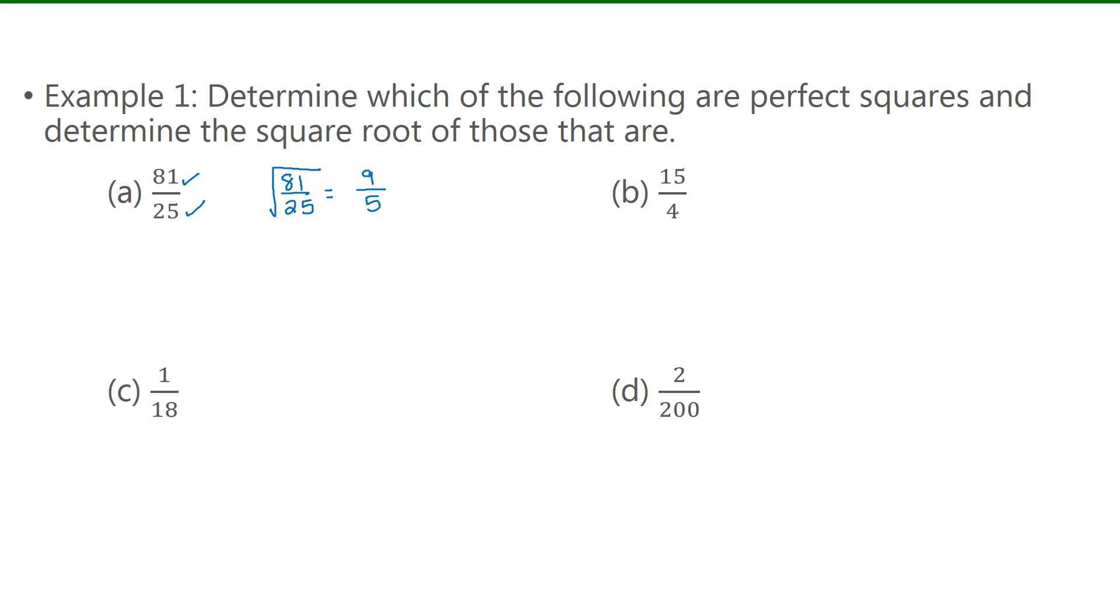For b I have 15 over 4. 15 is not a perfect square. Even though 4 is, both the numerator and the denominator need to be perfect squares. So this is not a perfect square. I also want to take note that this fraction could not be reduced, because that is always step 1 when we have fractions - you have to reduce the fraction first. For c, 1 is a perfect square and 18 is not, so that makes this not a perfect square either.